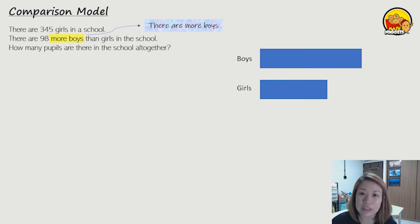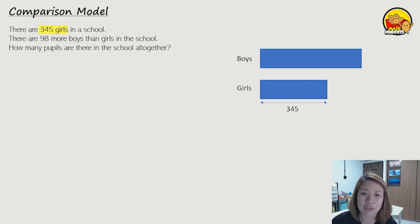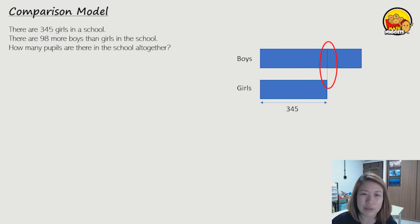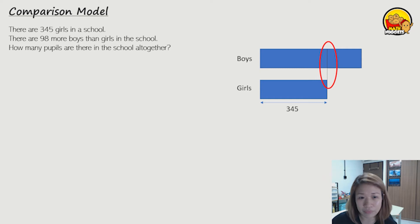Next, let's fill in the figures. We know that there are 345 girls in the school, so let's fill in 345 in the model for the girls. Next, we need to extend our lines — extend the line up to make equal parts. So now after extending the line up, we will have two equal parts there.